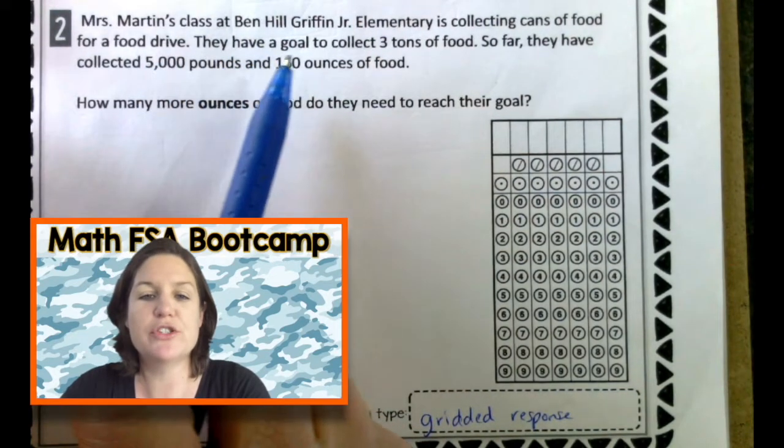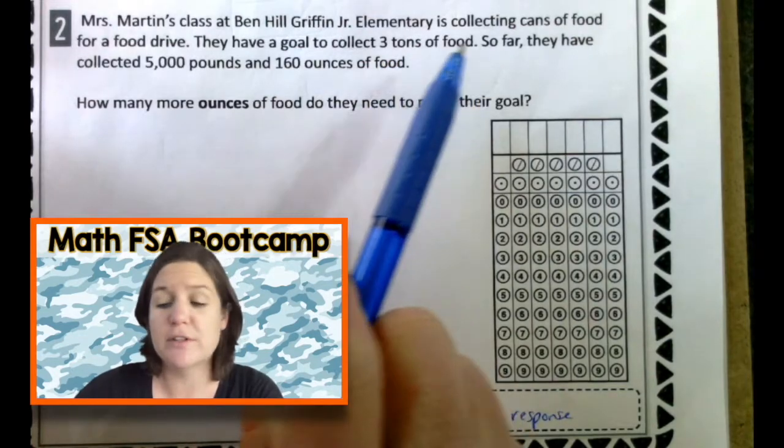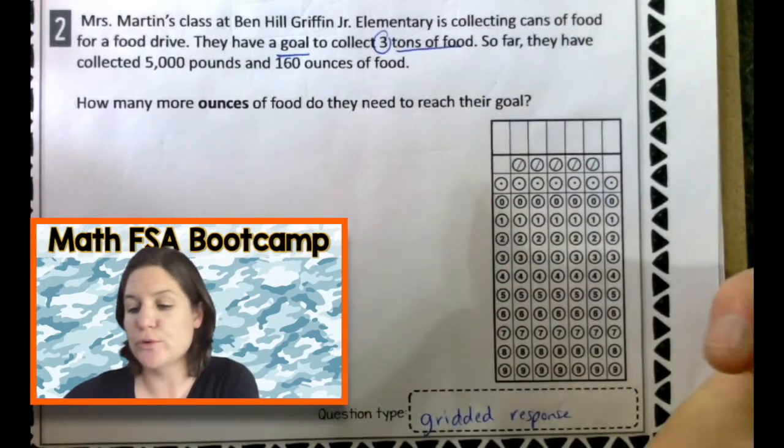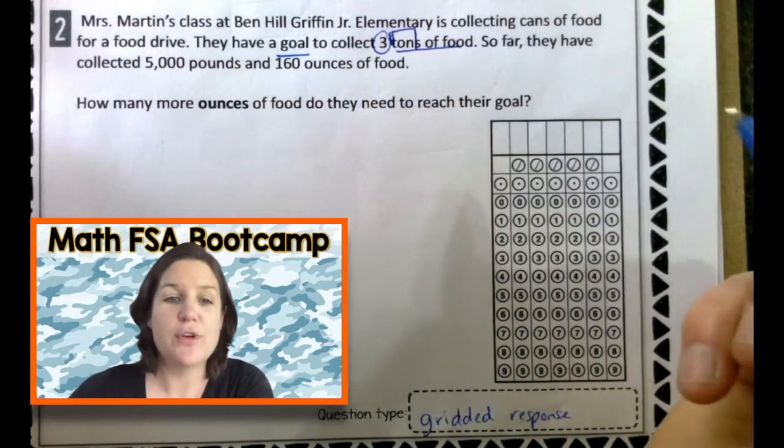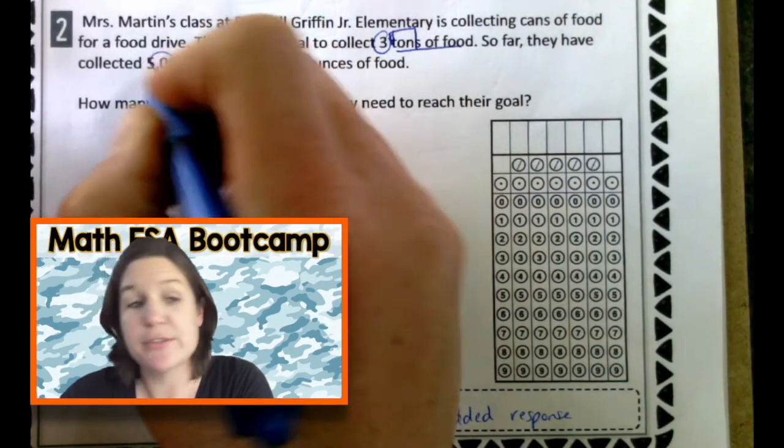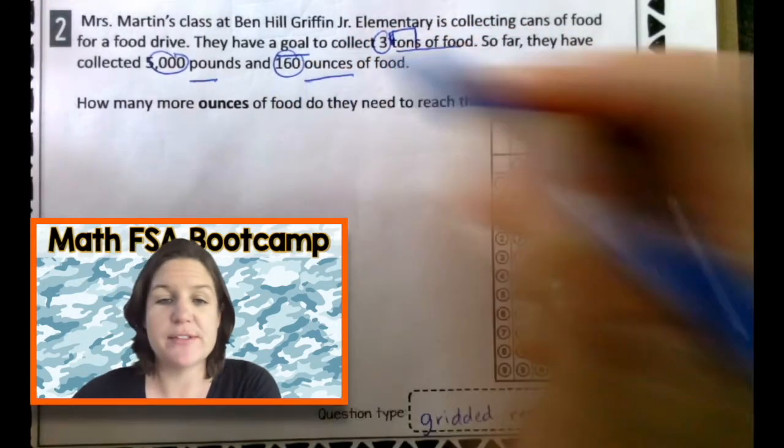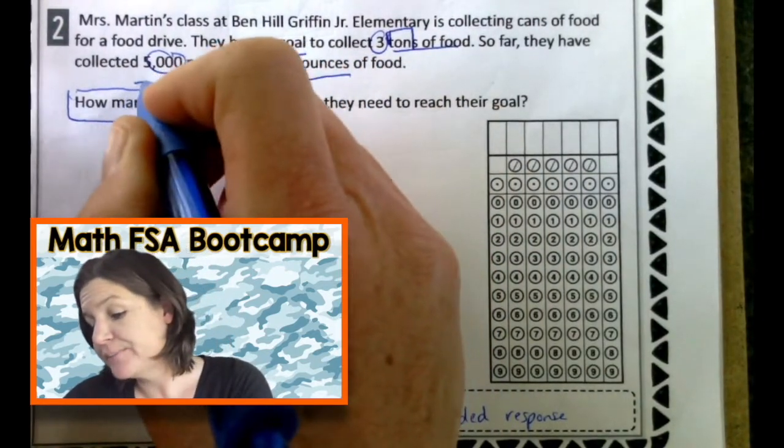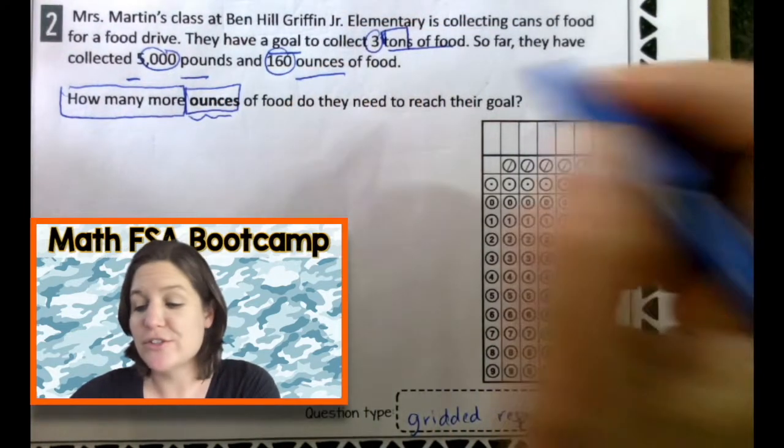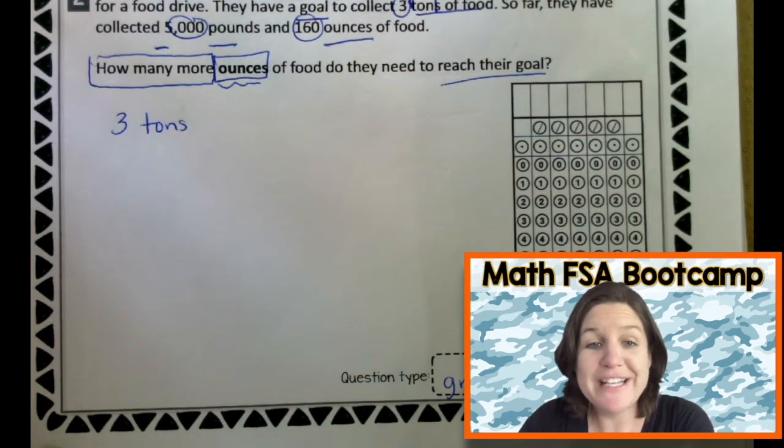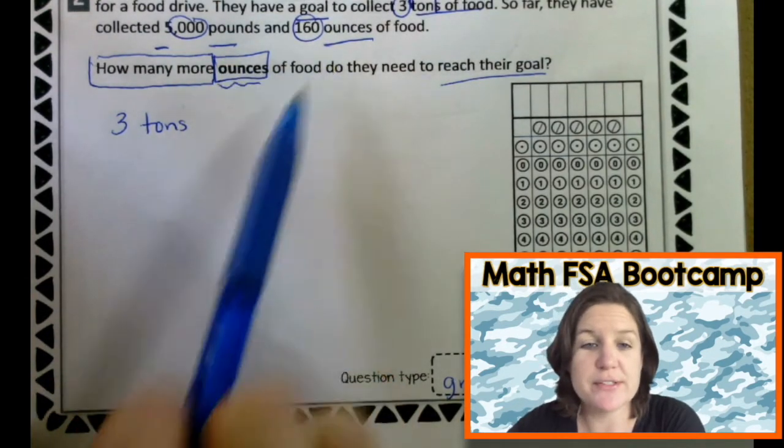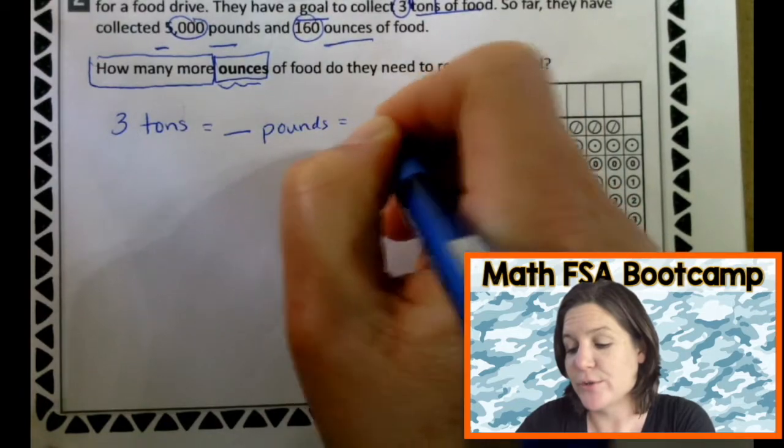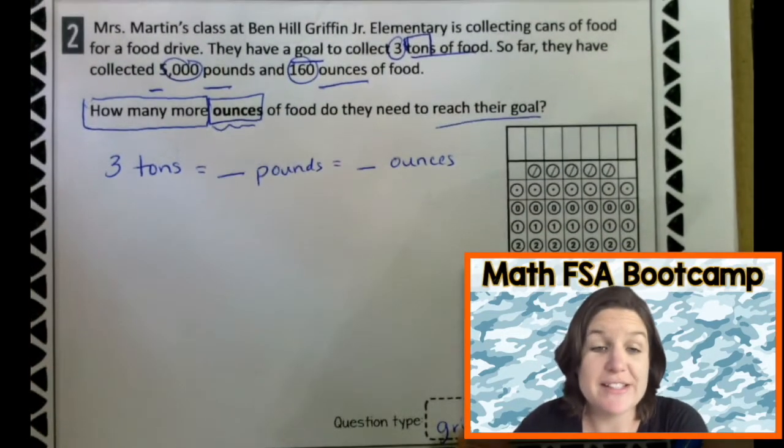Let's go ahead and tackle number two. Miss Martin's class at Ben Hill Griffin Junior Elementary is collecting cans of food for a food drive. That is awesome. They have a goal to collect three tons of food. There's a unit right there. Tons. So far, they have collected 5,000 pounds and 160 ounces of food. How many more? Which means I'm going to subtract. How many more ounces of food do they need to reach their goal? We know they have a goal of three tons and we know they have pounds and ounces. So, what we need to do is convert the three tons into pounds and then those pounds into ounces first.